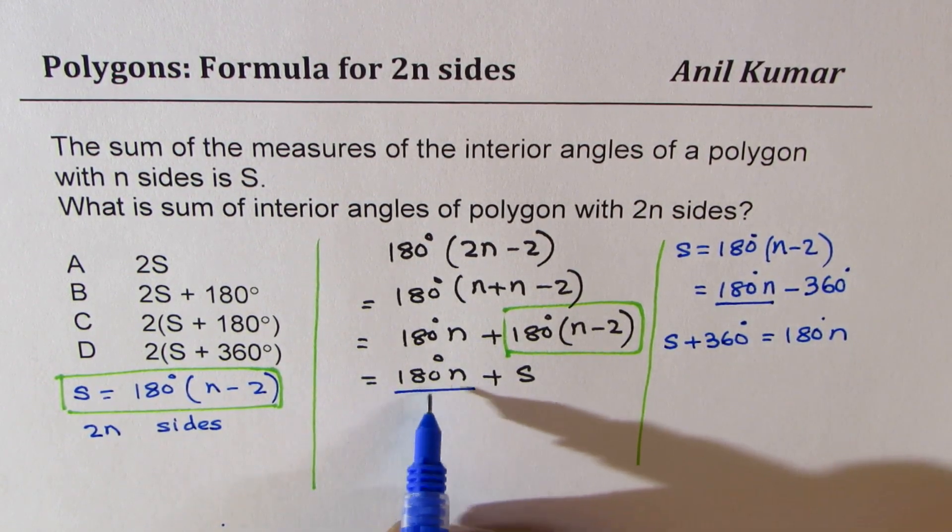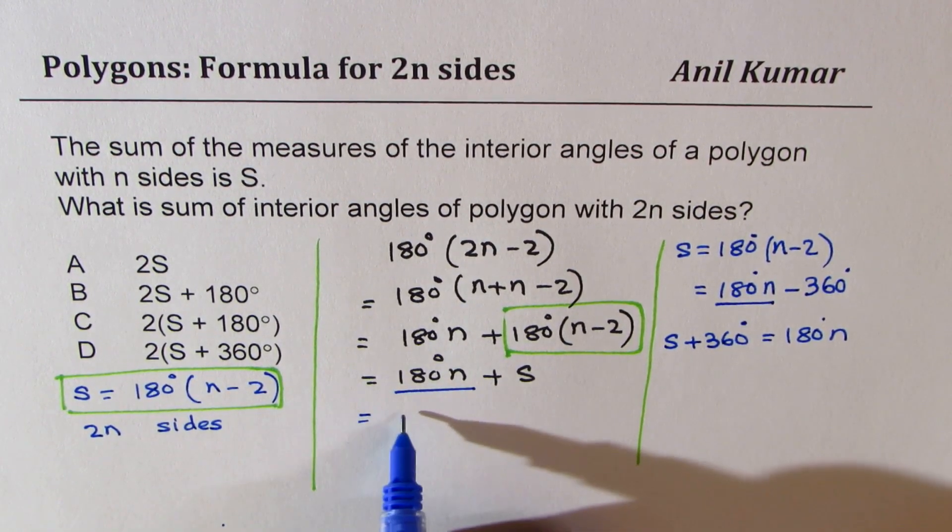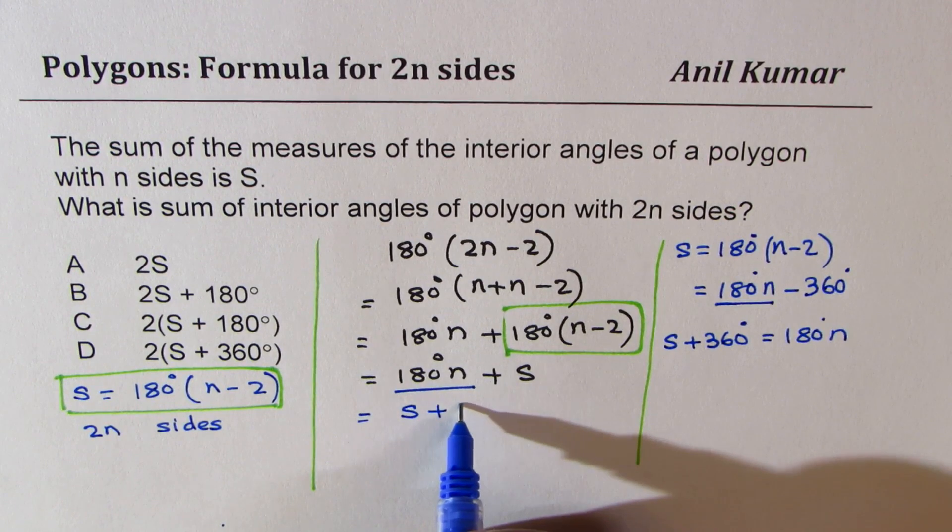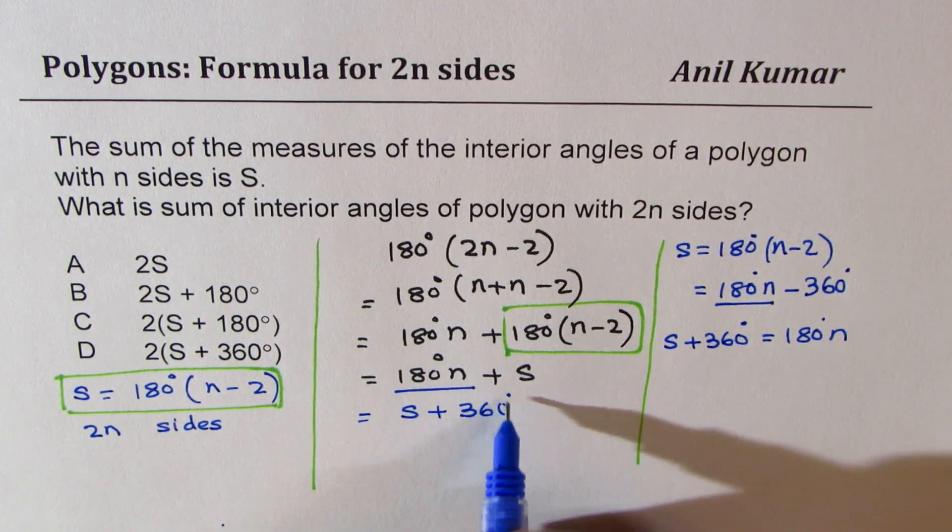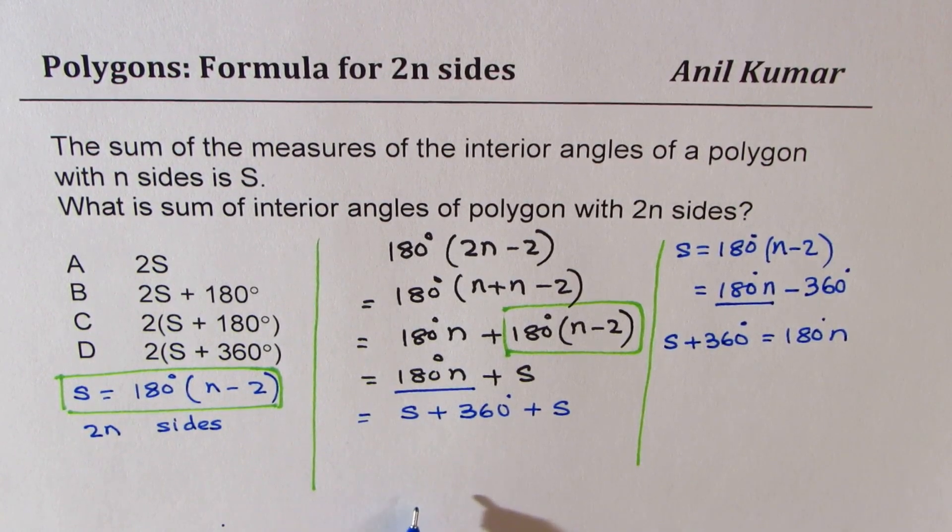So we replace this with 180n. So here, instead of 180n, I can write S plus 360 degrees, right? We already have S here. So we did this substitution.